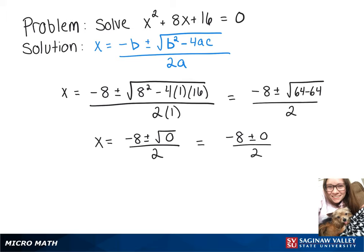Since negative 8 plus 0 and negative 8 minus 0 is the same thing, we'll actually have a repeat solution here. So x is going to be equal to negative 8 over 2, which is negative 4.